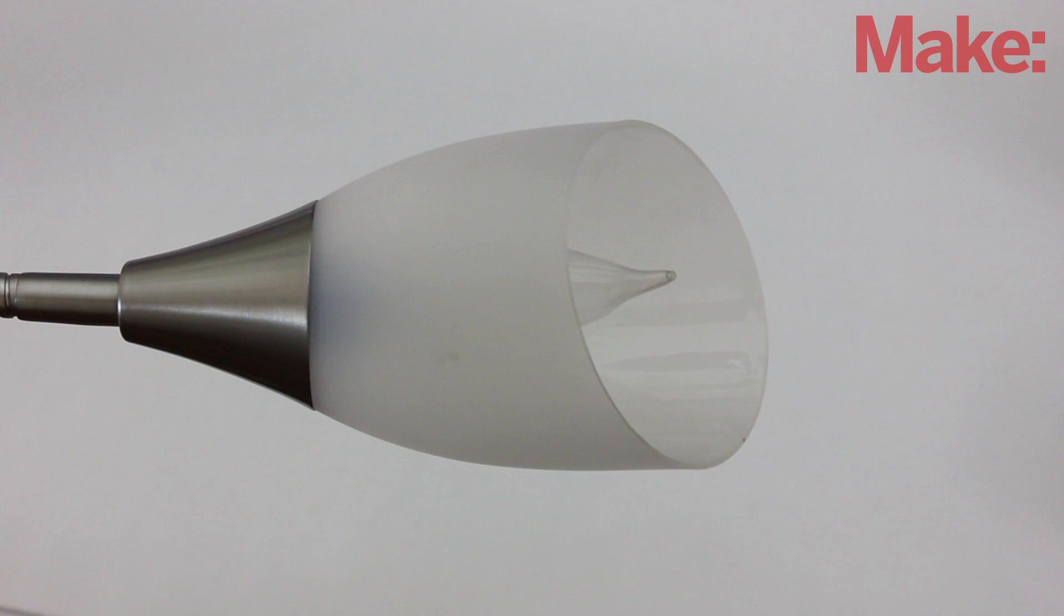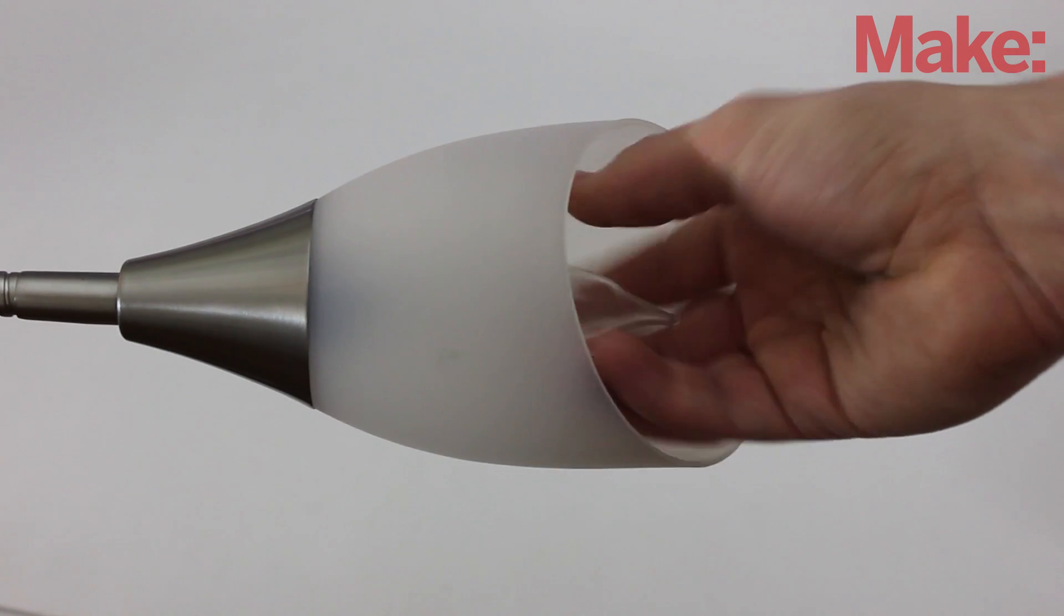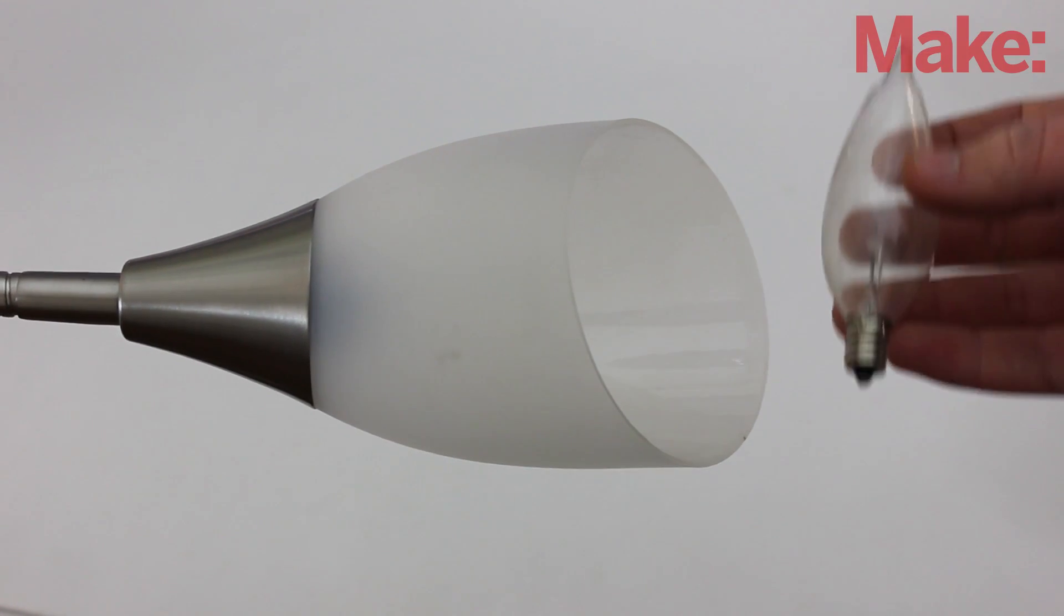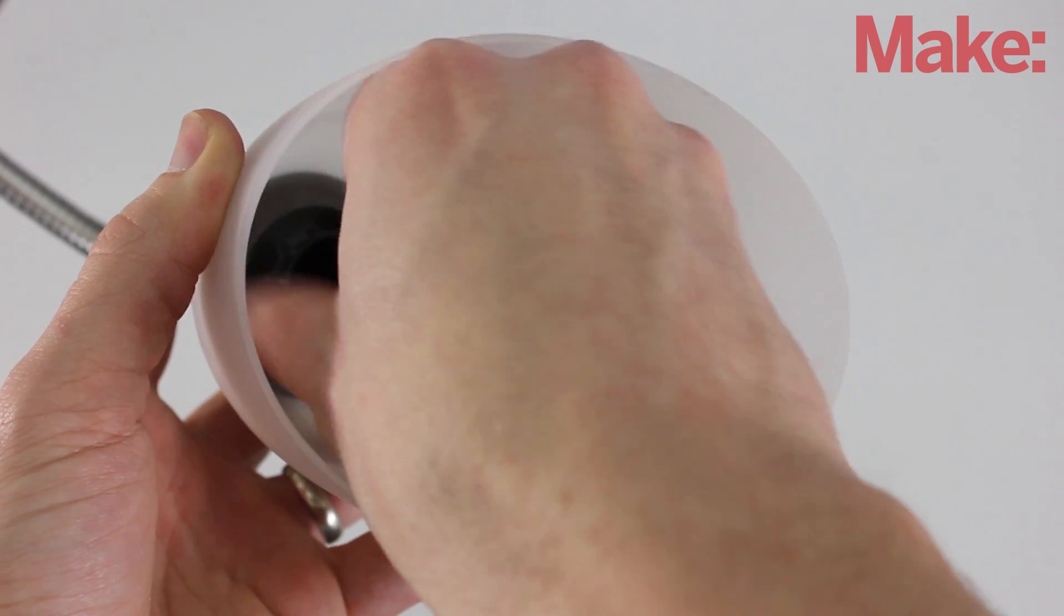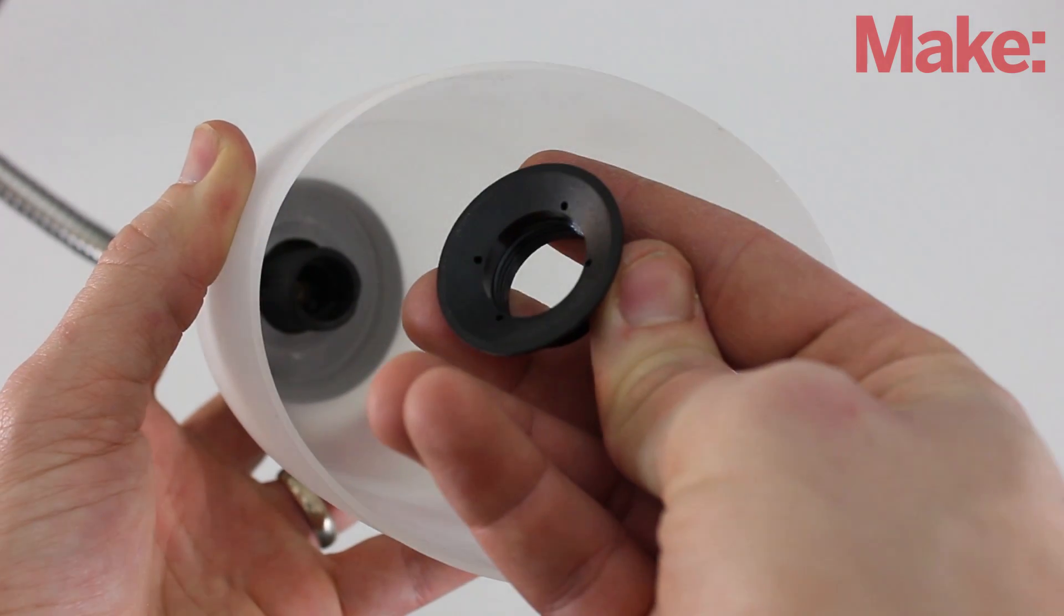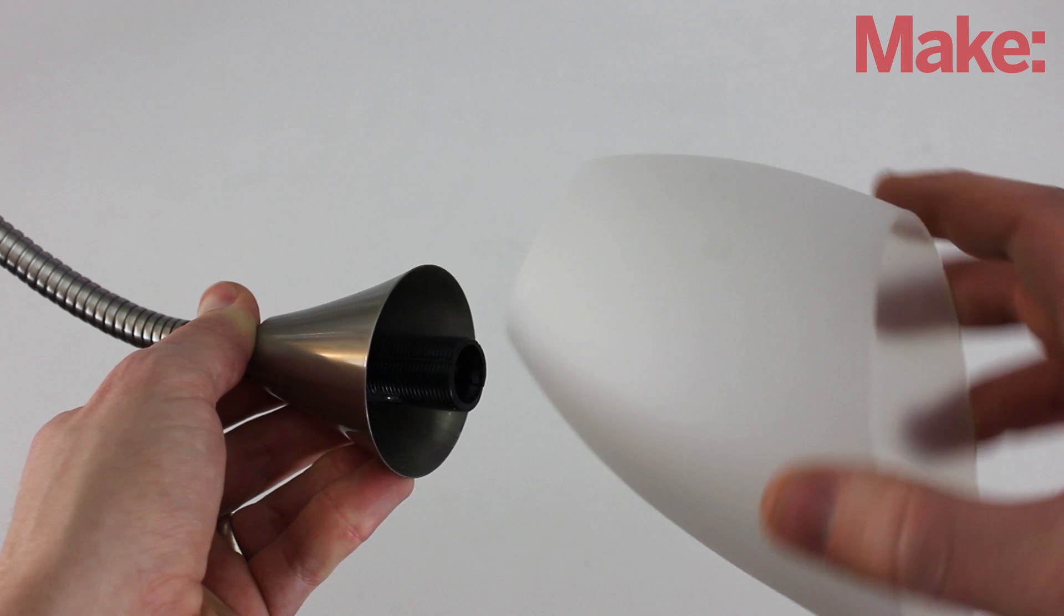Now you need to remove the lamp assembly. Start by taking out the light bulb. Then, unscrew the large plastic nut at the bottom of the fixture. This will let you remove the outer cover.